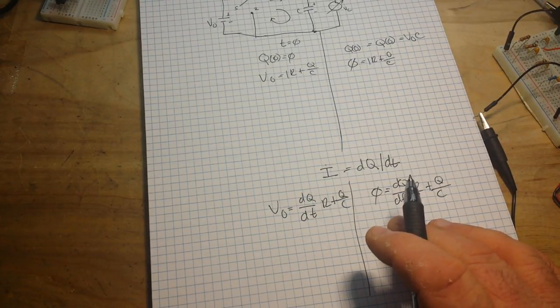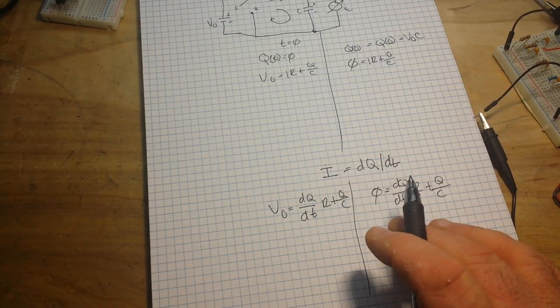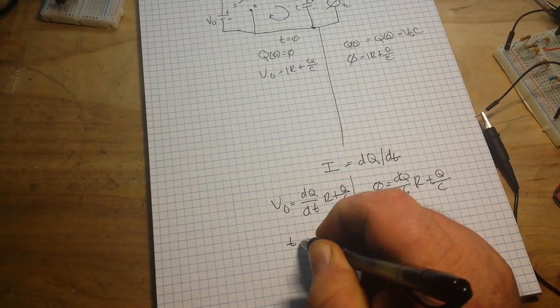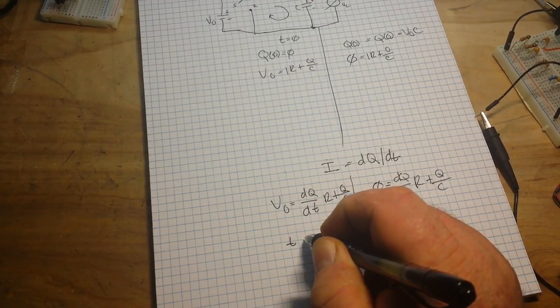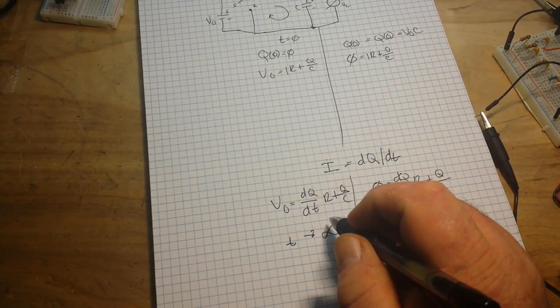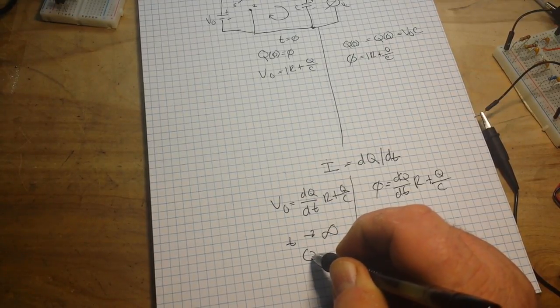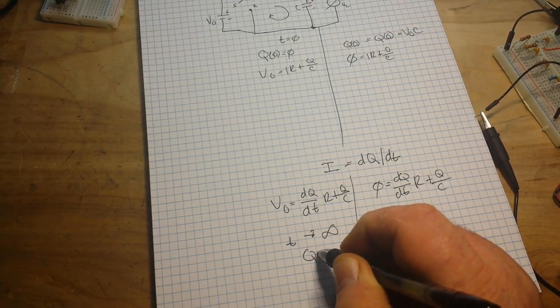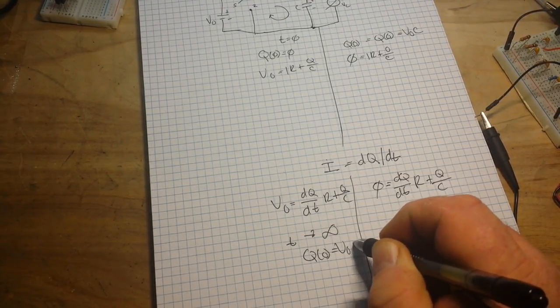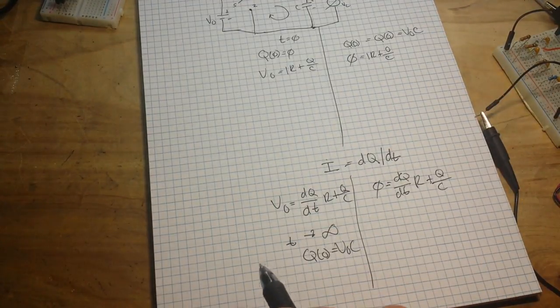So the theory behind this is called an inhomogeneous differential equation. And it says in the limit of very long times, as T approaches infinity, the charge approaches the final value. So we can say that Q zero equals V zero times C. And where did we see that? Well, we saw that back up here as well.